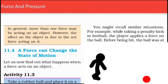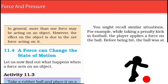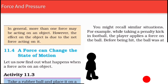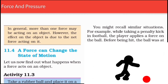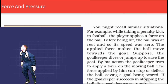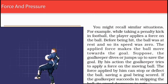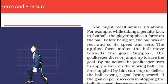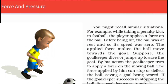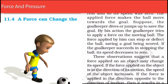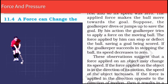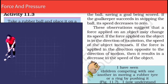You might recall similar situations — for example, while taking a penalty kick in football. The player applies a force on the ball; before being hit the ball was at rest so its speed was zero. The applied force makes the ball move towards the goal. If the goalkeeper dives or jumps to save the goal, he applies a force on the moving ball and tries to bring it to rest. The force applied by him can stop or deflect the ball, saving a goal.